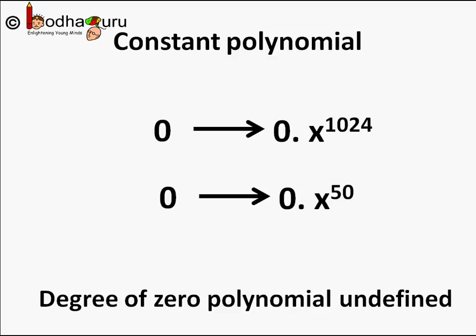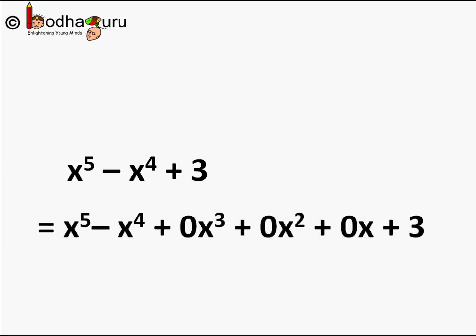Generally, in real life examples we often find polynomials in which exponent of variables in the polynomial are not in such a perfect continuous order. For example, x to the power 5 minus x to the power 4 plus 3. Here, x cube plus x square plus x term is missing. We can assume that coefficient of those terms is 0. Hence those terms have become 0. 0 multiplied by anything is 0.